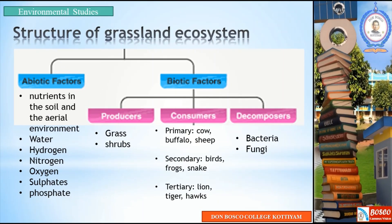Next, let us look at the structure of the grassland ecosystem. In an ecosystem, we divide components into biotic and abiotic factors. The abiotic factors include nutrients in the soil and aerial environment — water, hydrogen, nitrogen, oxygen, sulfates, and phosphates.